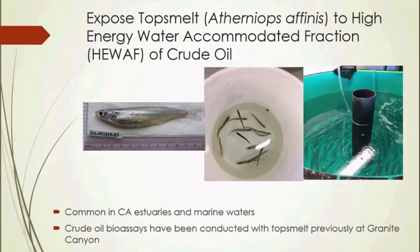Our exposure organism is topsmelt, a species common in California estuaries and marine waters. Our collaborators at Granite Canyon have conducted many crude oil bioassays in the past using topsmelt, so they have experience caring for these organisms in the laboratory. They collected a cohort of topsmelt from Elkhorn Slough, shown in the photograph in the green tank. Topsmelt is the exposure organism we'll be working with.